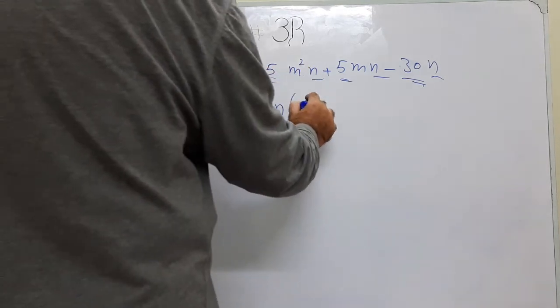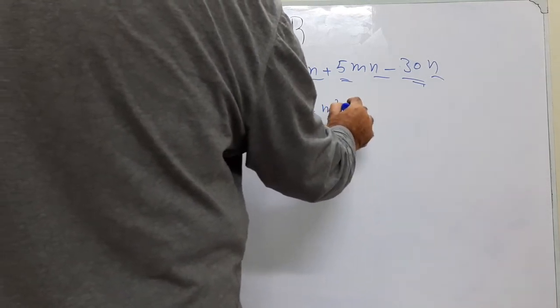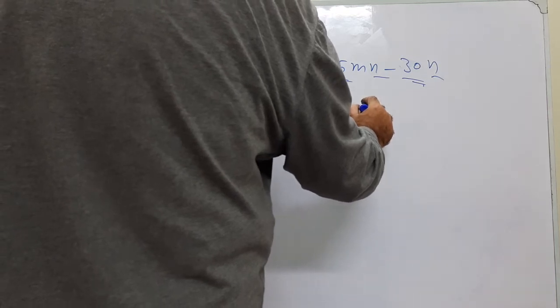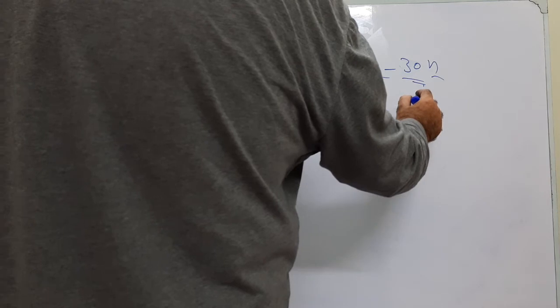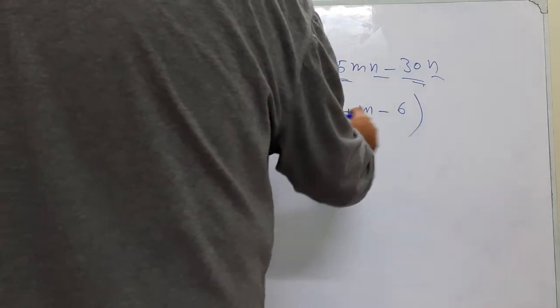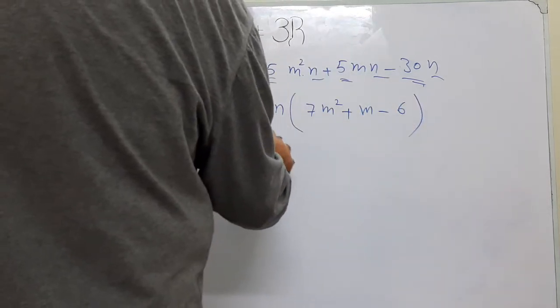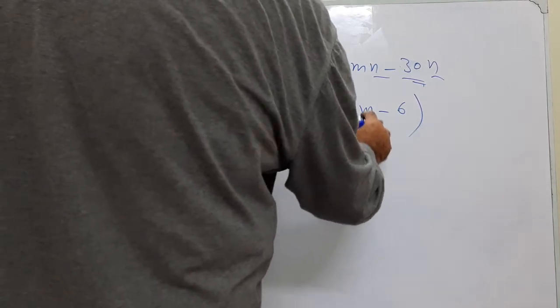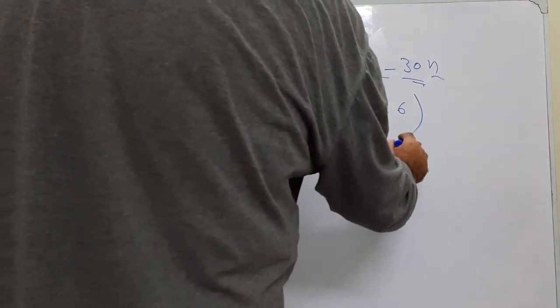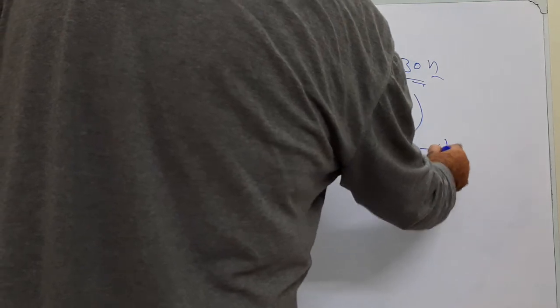So inside it becomes 7M square plus M minus 6. So we need to factorize this one. It will come like this. 7M square plus here it is 1. For 1 we make a bracket M minus 6.